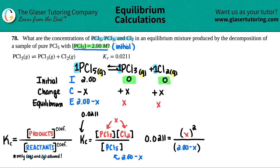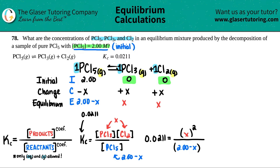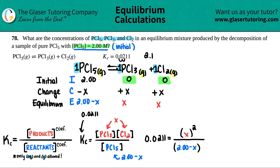Now we have an x² and an x — that's the quadratic. We have to check whether we can neglect x. One rule is that if Kc is 1×10⁻⁵ or smaller you can neglect x, but 0.0211 in scientific notation is 1.22×10⁻², which is not small enough. So we cannot neglect x and must use the quadratic formula.